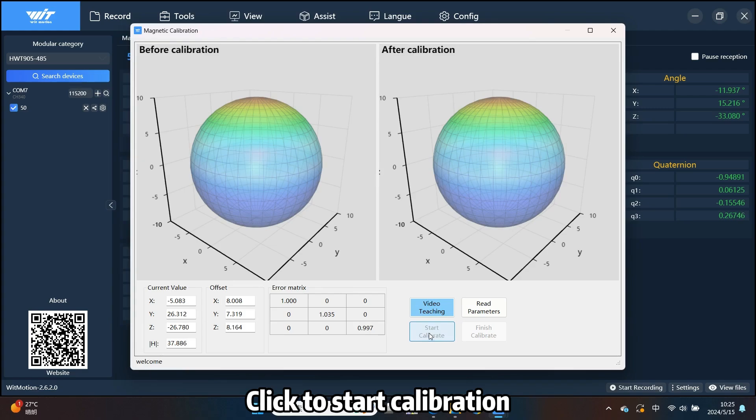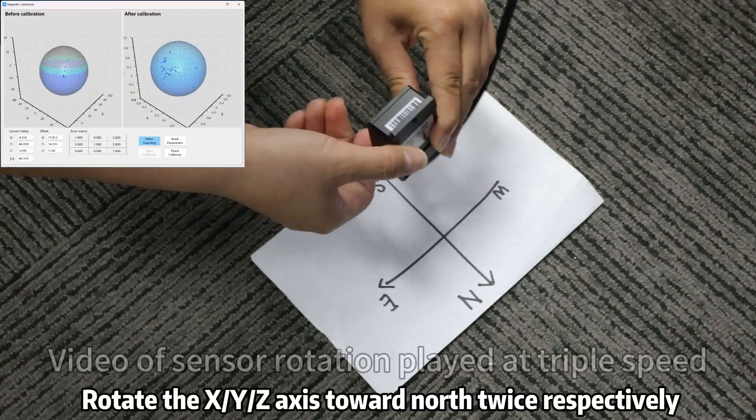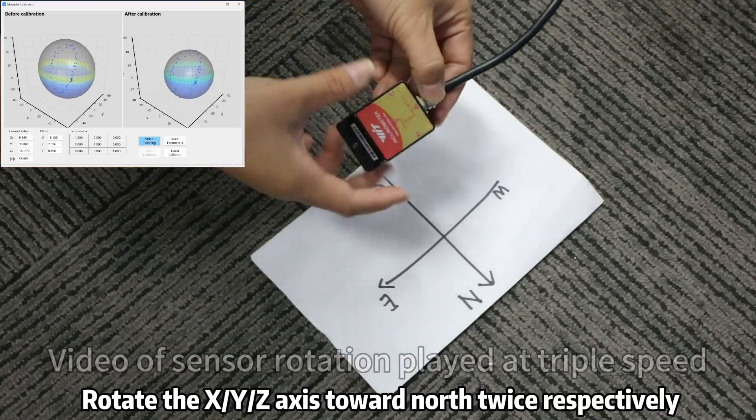Step 4: Click to start calibration. Step 5: Rotate the xy-axis toward north twice respectively.